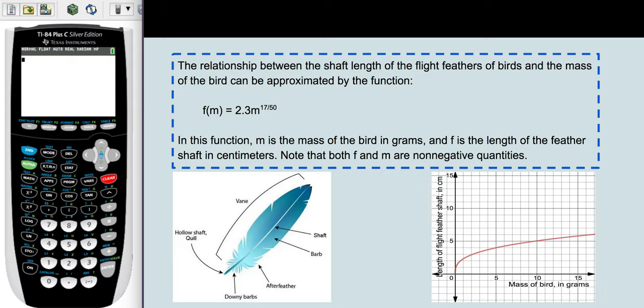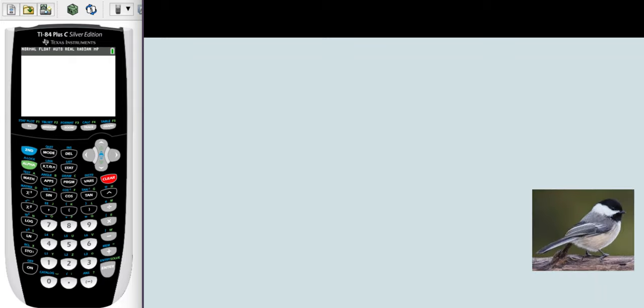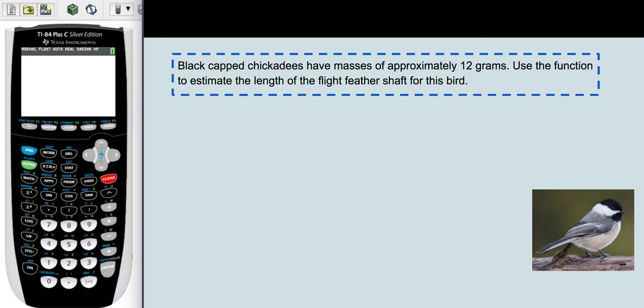Let's go use the function more specifically. Black-capped chickadees have masses of approximately 12 grams. Use the function to estimate the length of the flight feather shaft for this bird.